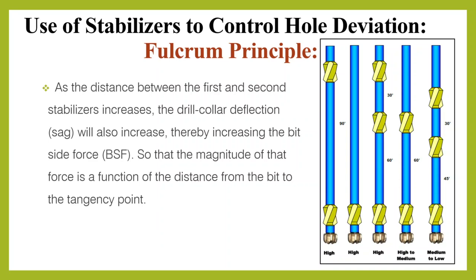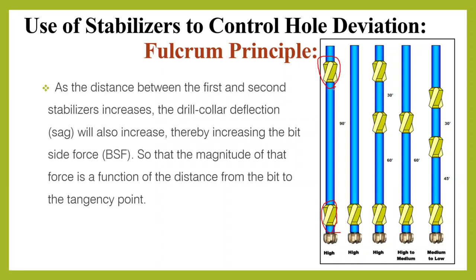As the distance between the first stabilizer and second stabilizer increases, the drill collar deflection will also increase. We can see here configurations with distances of 90, 60, and 45 feet, with two and three stabilizers. One stabilizer configuration gives the highest build, and this one also high but less so because the distance is smaller than the first condition. This one gives high to medium, and this one medium to low, because the distance is very short.